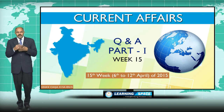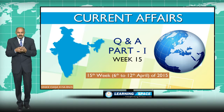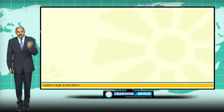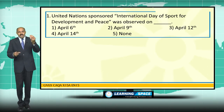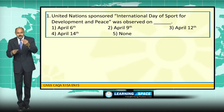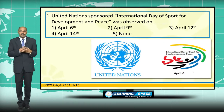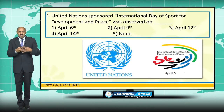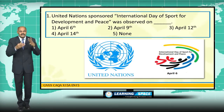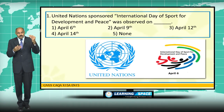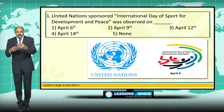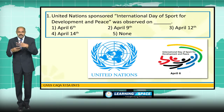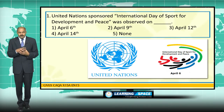Welcome back to Week 15 Question and Answers Part 1. We are going to discuss 32 questions in Part 1 and 32 questions in Part 2. The first question: the United Nations sponsored International Day of Sport for Development and Peace was observed on April 6th. In 2013, the United Nations took a decision to observe April 6th as the International Day of Sport for Development and Peace.